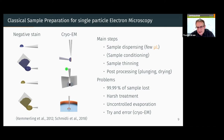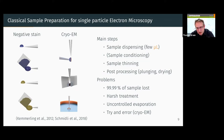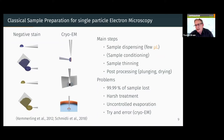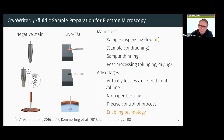In cryo-EM, you apply the sample, blot often from both sides, and then plunge-freeze, vitrifying the sample rapidly in liquid ethane. Both technologies are elegant but also very harsh. We lose 99.99% of our sample. What we have developed over the last 10 years is replacing these classical methods with microfluidic methods. There is no paper-blotting step at all — it is a virtually lossless method. We start with nanoliter-sized sample volumes and end up with the total volume on our grid.